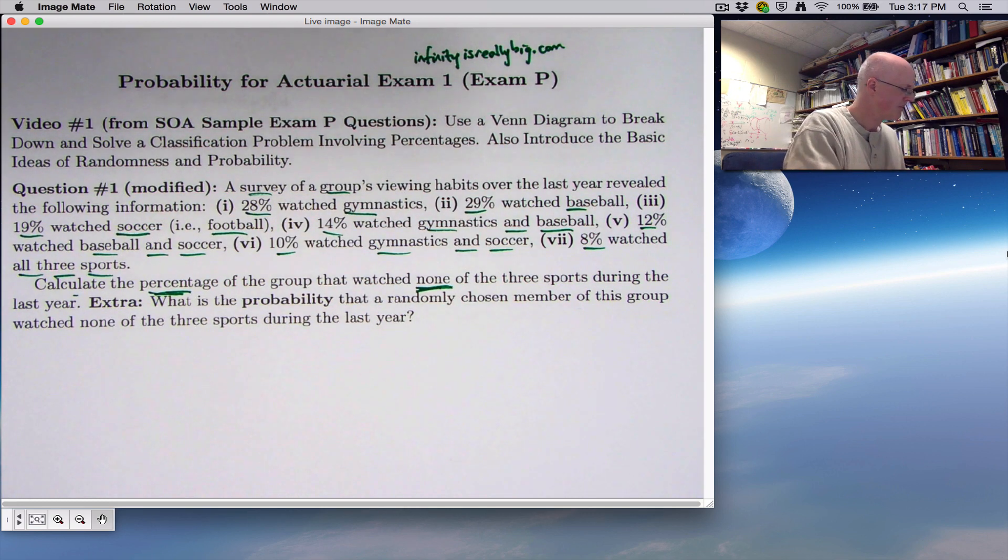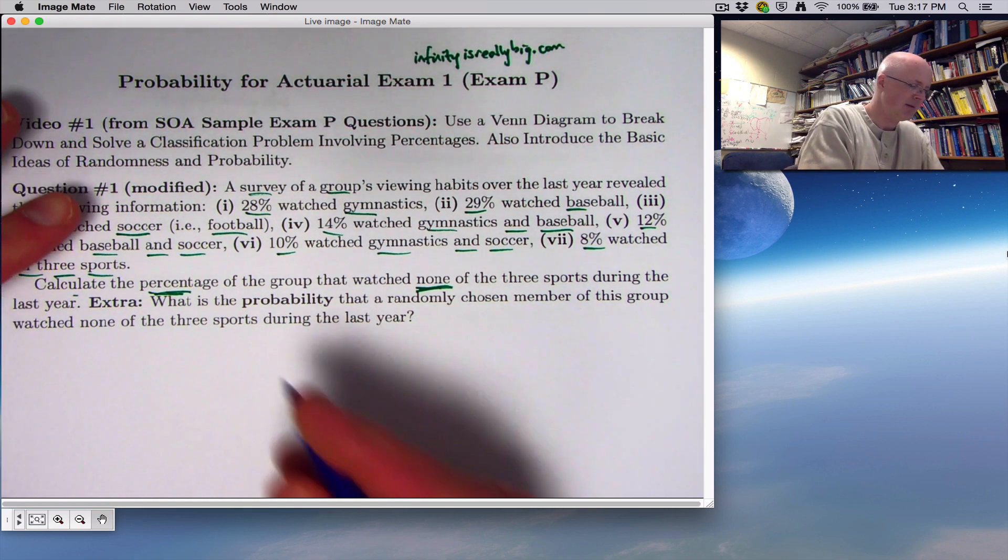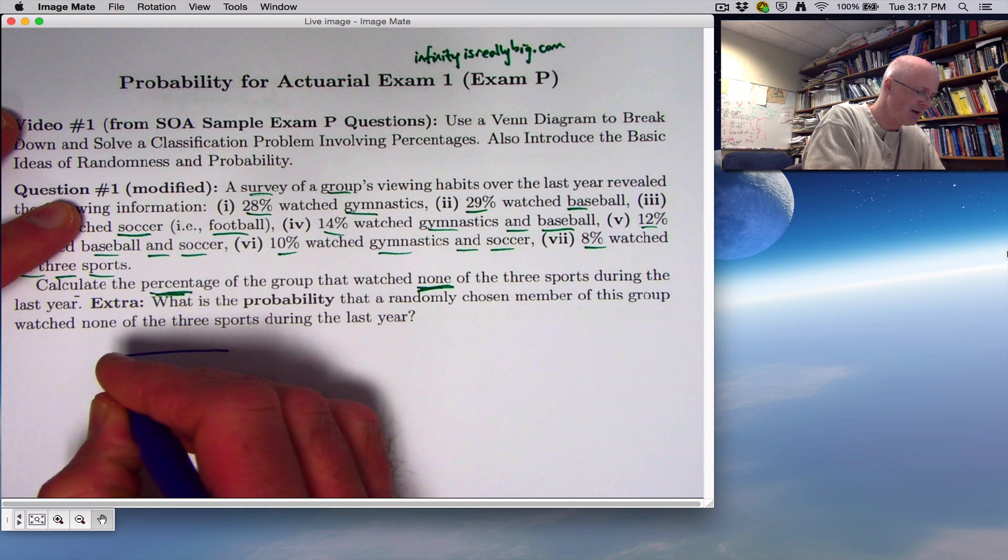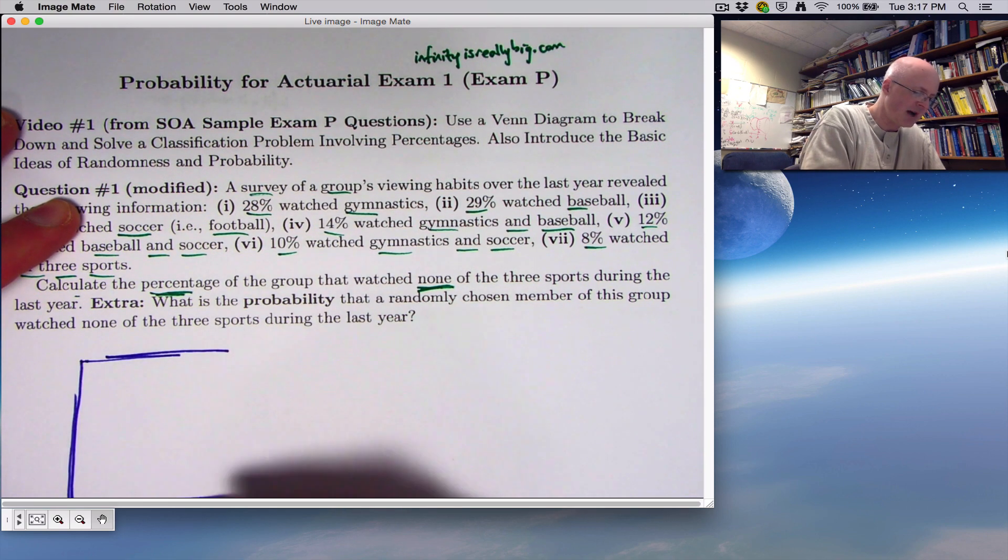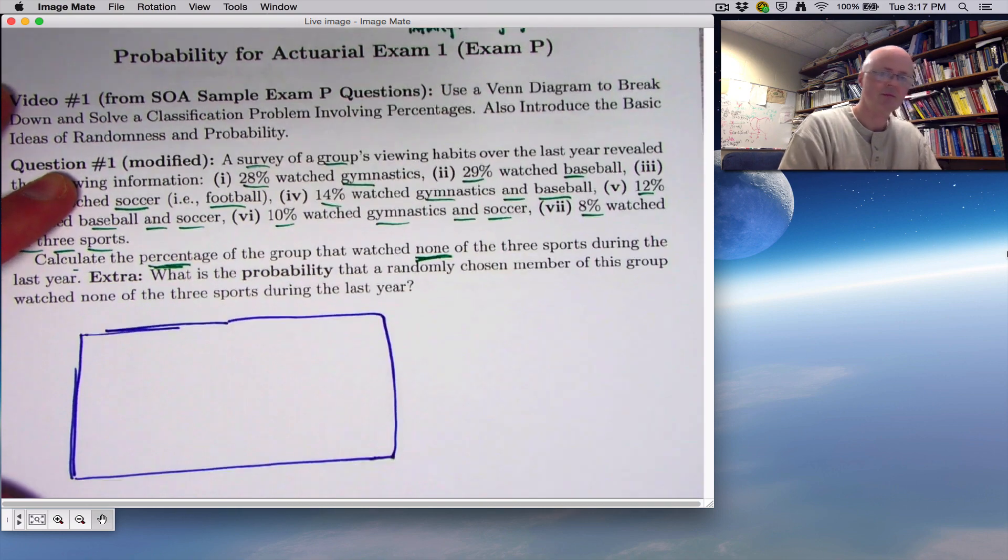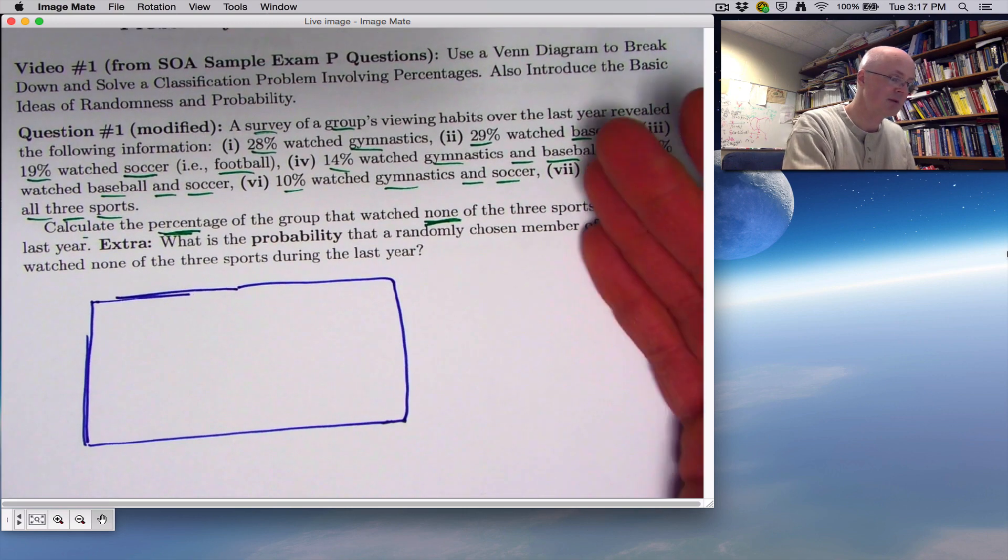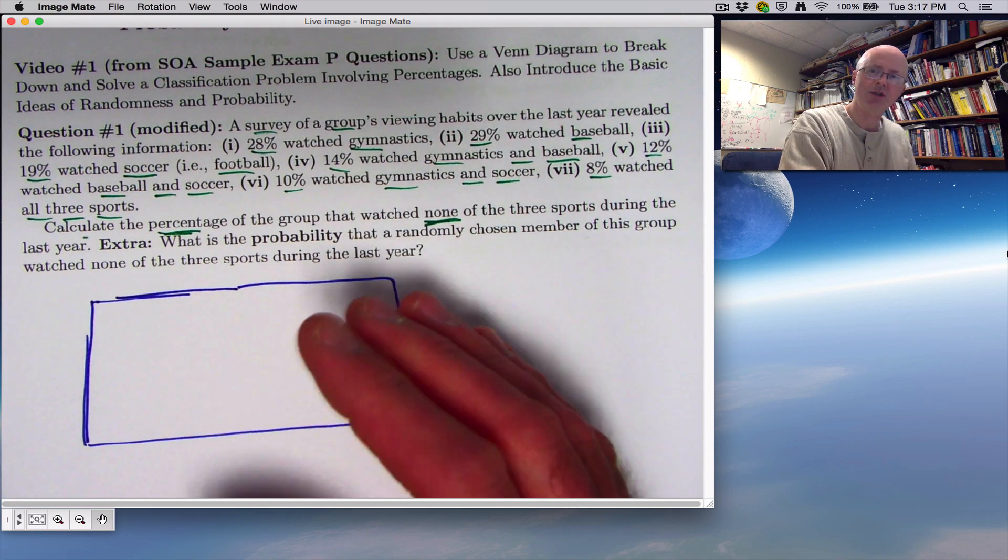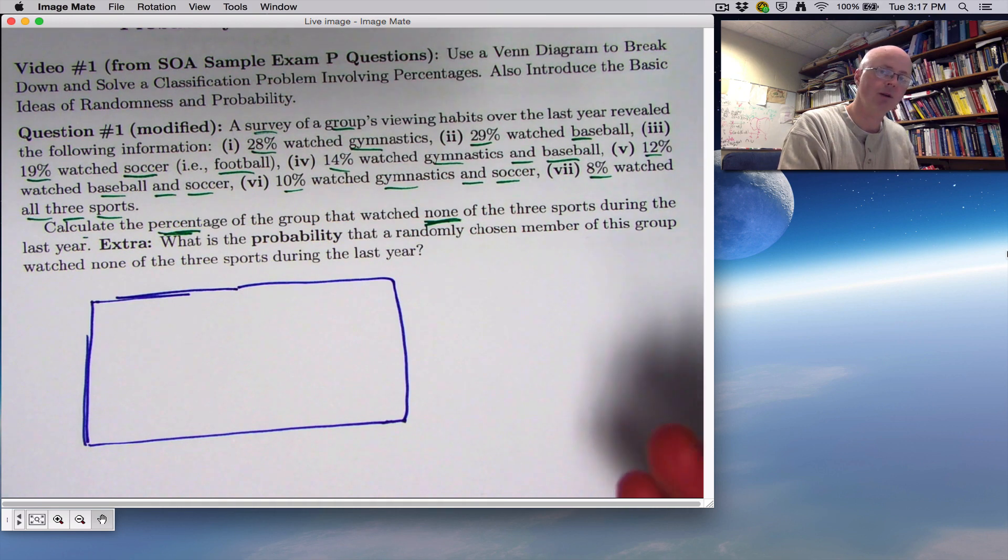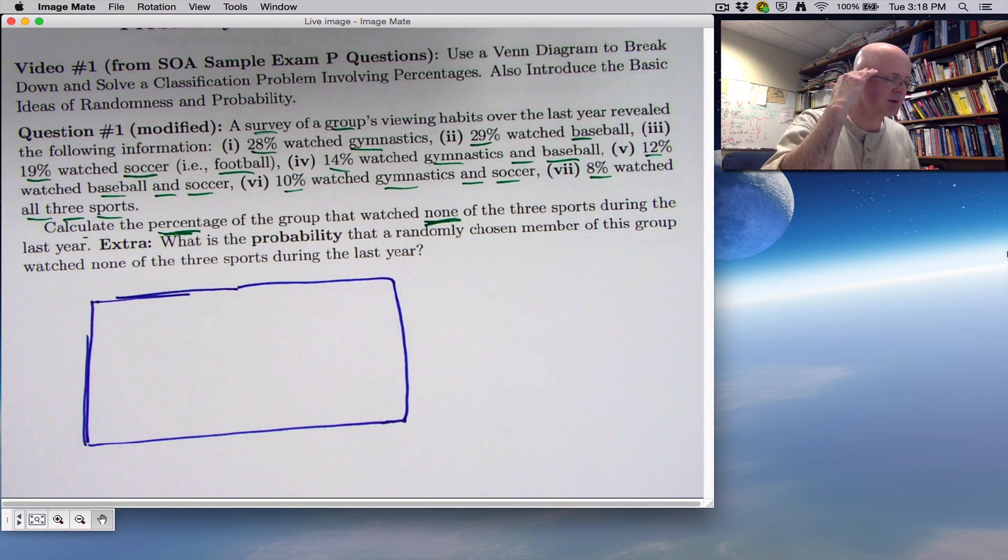All right, so what is a Venn diagram? Well, a Venn diagram oftentimes is drawn as a group of circles or blobs, sometimes in a box. I like drawing in a box, so I will first try to draw a rectangle here that's representing my box. There's our rectangle, our box. And in fact, you might even use your imagination and pretend this is like the floor of a gymnasium or something. And you've got people here, and they're going to stand in certain areas of this gymnasium based on what they watched in the last year.